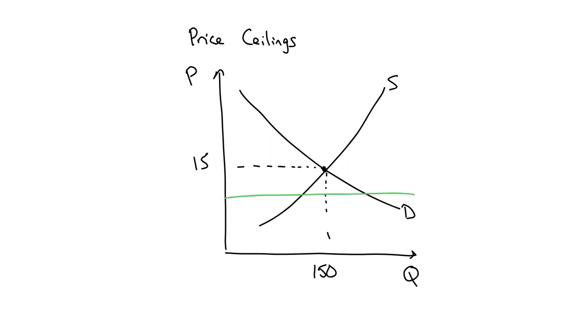However, there is a ceiling at 10. Now, what does a ceiling mean? It means that up here is illegal. That's what a ceiling means. You can't go above the ceiling. A ceiling is the top of something.